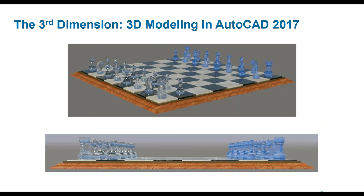Today we're going to be presenting 3D modeling in AutoCAD 2017. We've done this in the past but we're going to take a different angle at it. We're planning to show you how to model a chess set - from the board to all of the individual pieces - and hopefully we can do this in under an hour. One of our comments from past webinars is that we keep seeing a lot of the same things, so we thought let's put something on the table.